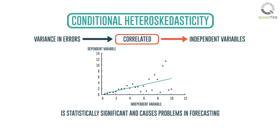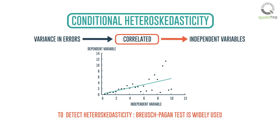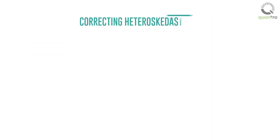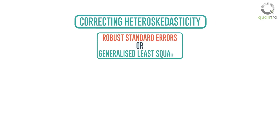Fortunately, there are many software packages that can detect heteroscedasticity. The Breusch-Pagan test is widely used in finance research owing to its generality. Correcting heteroscedasticity is also common, using robust standard errors or generalized least squares, which help to eliminate heteroscedasticity.